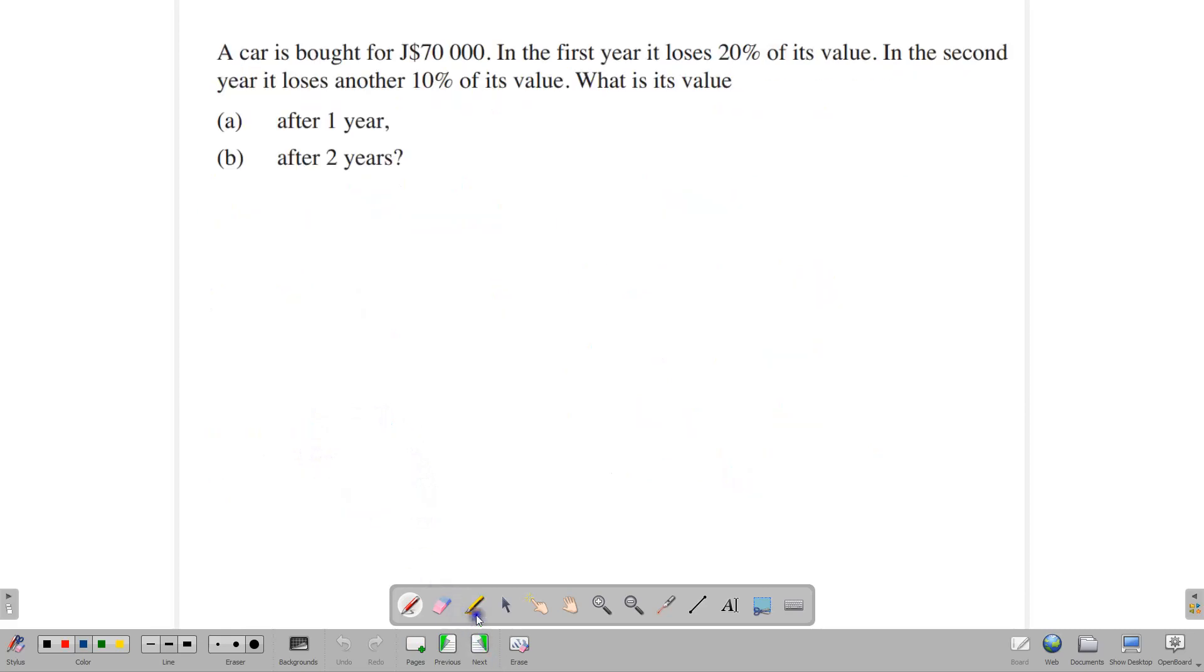There's another question that we want to look at. A car is bought for $70,000. In its first year, it loses 20% of its value. In the second year, it loses 10% of its value. What is its value A, after one year, and B, after two years. Now, this question is based on the reducing balance method, but it does not use the same percentage per year. So let's work with year one.